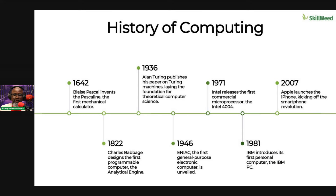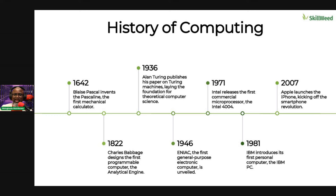The history of computing goes as far back as 1642, when Blaise Pascal invented the Pascaline, the first manual calculator. In 1822, some programming logic was developed. In 1936, we had Turing machines. In 1946, general-purpose electronic devices were proposed. By 1971, microprocessors were built. In 1981, we had the IBM mainframe, and it's just been evolving ever since. In 2007, Apple launched some major products.